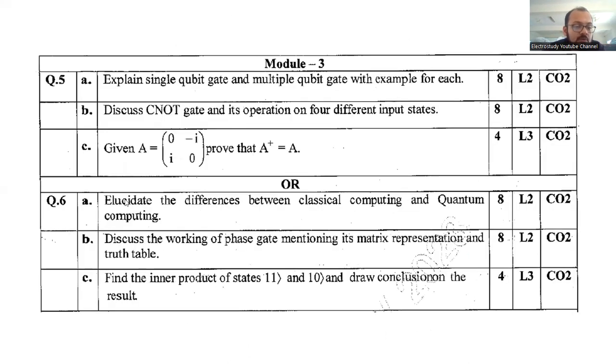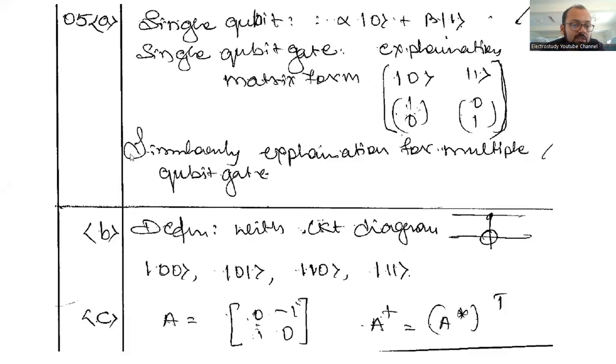Question number five C: Given the matrix A is equal to 0 minus i, i 0, prove that A star or A plus, that is equal to A, A transpose is equal to A. Like that I have to verify it.